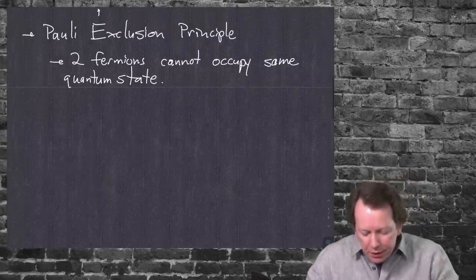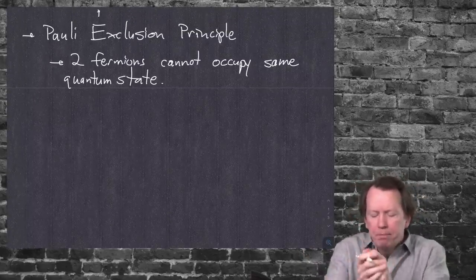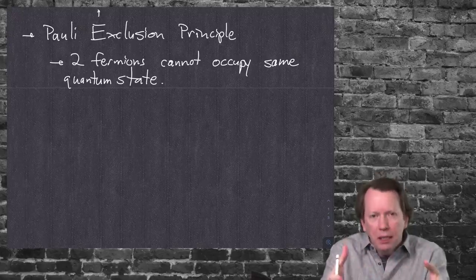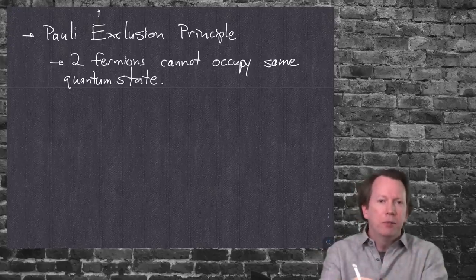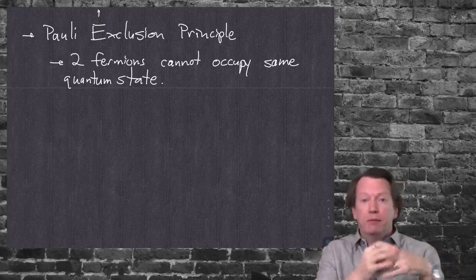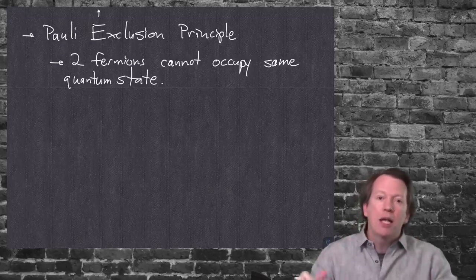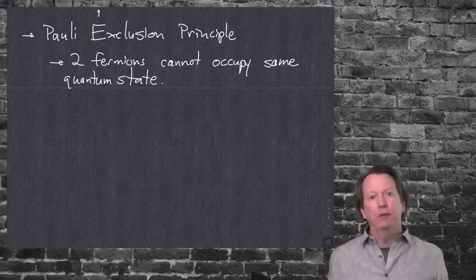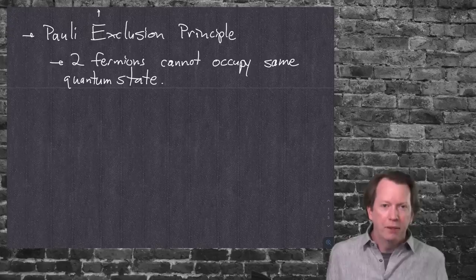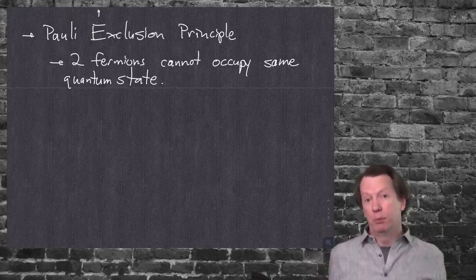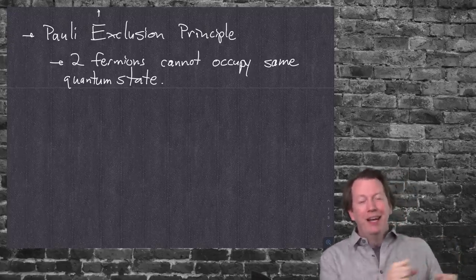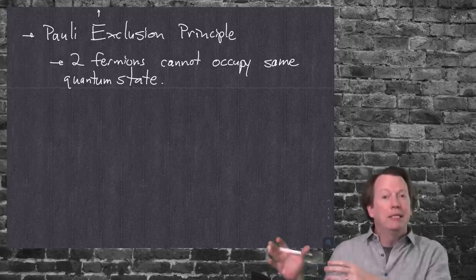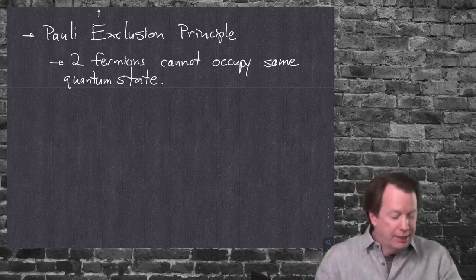You may have heard fermions defined as particles with a spin of one-half, three-halves, five-halves — half-integer spin — while bosons have spins of zero, one, two — integer spins. That's true, but it's not the definition. The defining principle of fermions is that they do not take up the same quantum state. The connection between taking up space and having half-integer spin is called the spin-statistics theorem, and we'll talk about that. So: what is a fermion? That's what we've got to get into here.